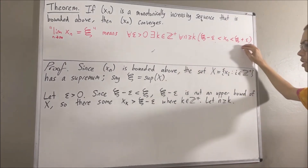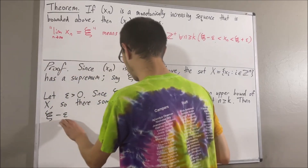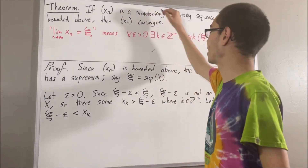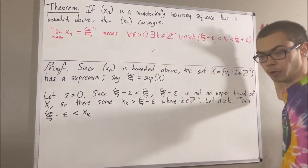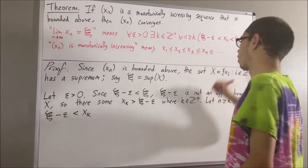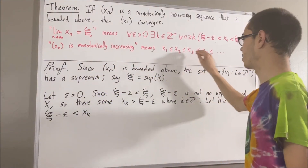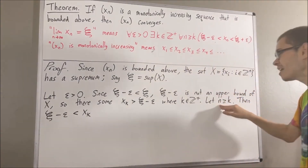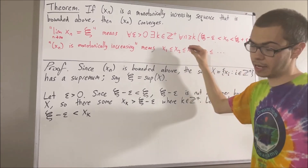From here, we want to show that this inequality is true. Let's start out by writing psi minus epsilon. We know that psi minus epsilon is less than x sub k. And since our sequence is monotonically increasing, it goes x1, x2, x3, x4, x5, and so on, continuing to get bigger and bigger — so x1 is less than or equal to x2, is less than or equal to x3, and so on. Since n is greater than or equal to k, this means that x sub k must be less than or equal to x sub n.